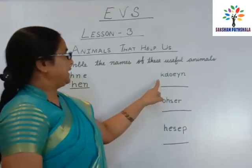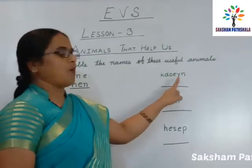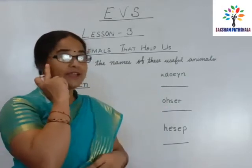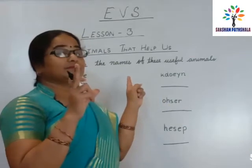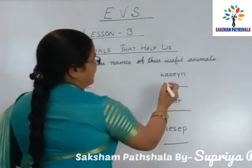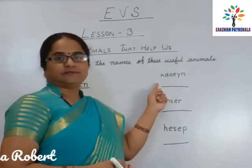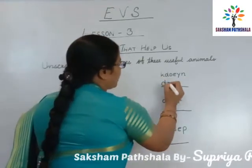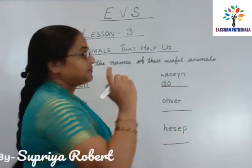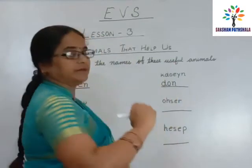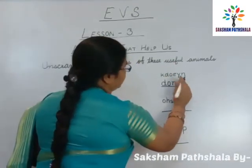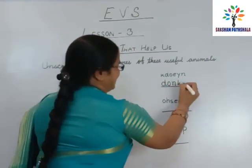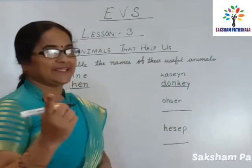Now here — K, D, O, E, Y, N. What is this? What is this? Think about it. What is the name of this animal? Yes, very good — Donkey! First letter D, then O, then N, then K, then E, then Y. Donkey. Very good.